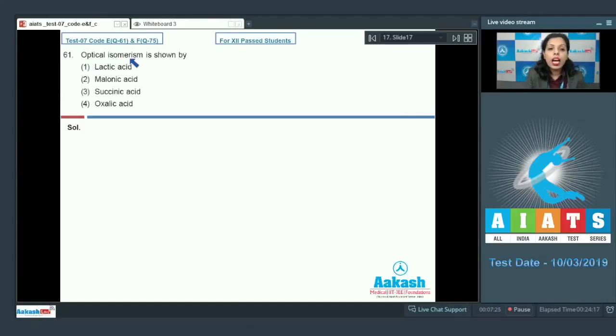Question number 61, optical isomerism is shown by. If we talk about optical isomerism, it is shown by all those compounds in which chiral carbon is there. If I talk about lactic acid, lactic acid can be represented as this structure and you can clearly see that this is the chiral carbon.